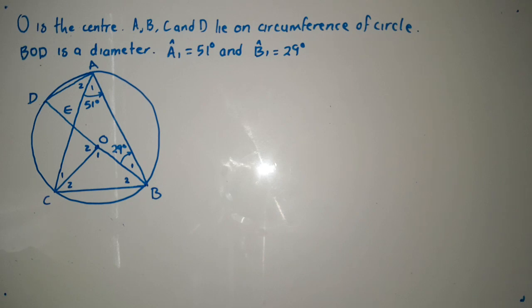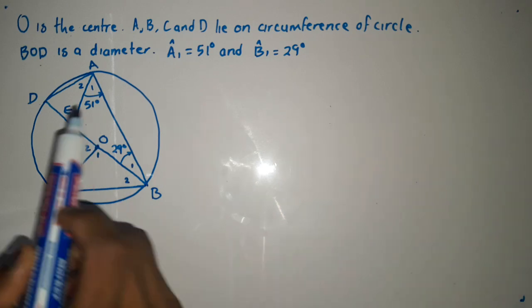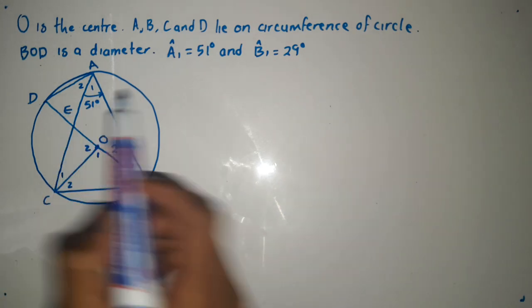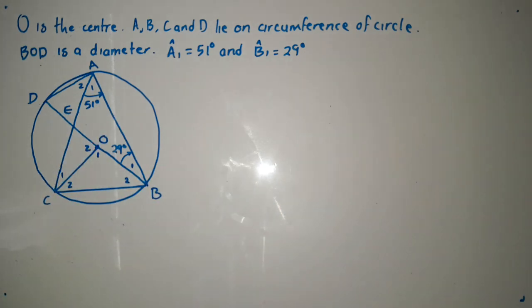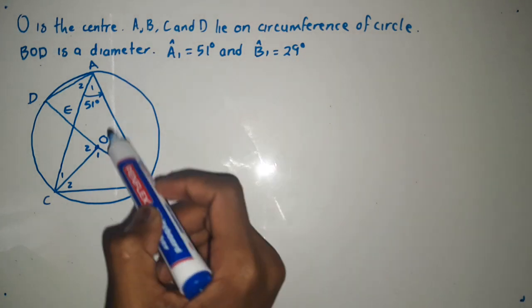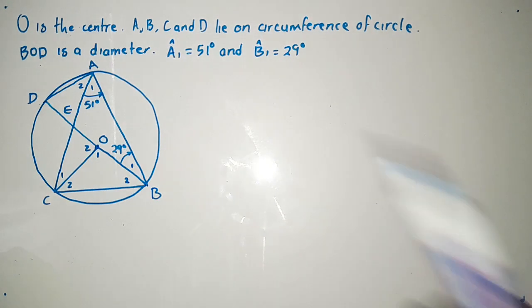A1 is equal to 51 degrees — yes, it is given there. Then B1 is equal to 29 degrees. I drew this diagram for us to save some time.